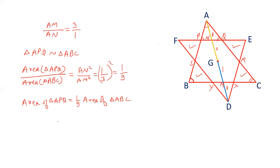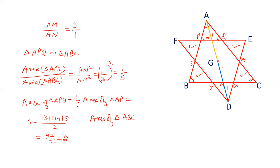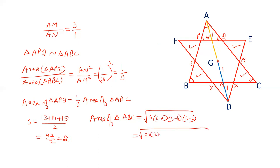So we just need to find the area of triangle ABC. We will apply Heron's formula. S = (13 + 14 + 15) / 2 = 42 / 2 = 21. Area of triangle ABC equals the square root of S(S−A)(S−B)(S−C). With S = 21: S−13 = 8, S−14 = 7, S−15 = 6.